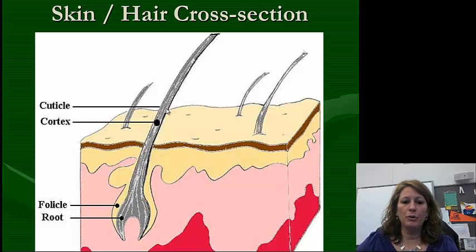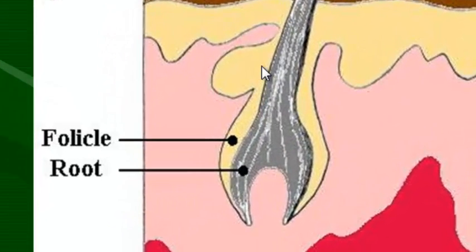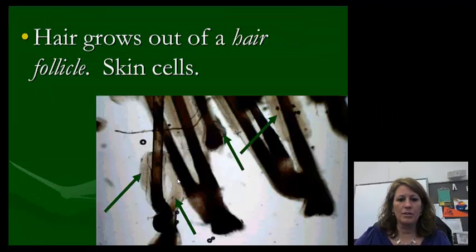When we look at a cross section, we're going to be talking about cuticle, cortex, and follicle. These are the things that scientists use to determine what the hair is and help with classification and identification. This is a cross section of skin. The hairs are protruding out, the cuticle's the outside, the cortex is the middle, and there's also a medulla. Where the hair attaches and embeds itself is the follicle.